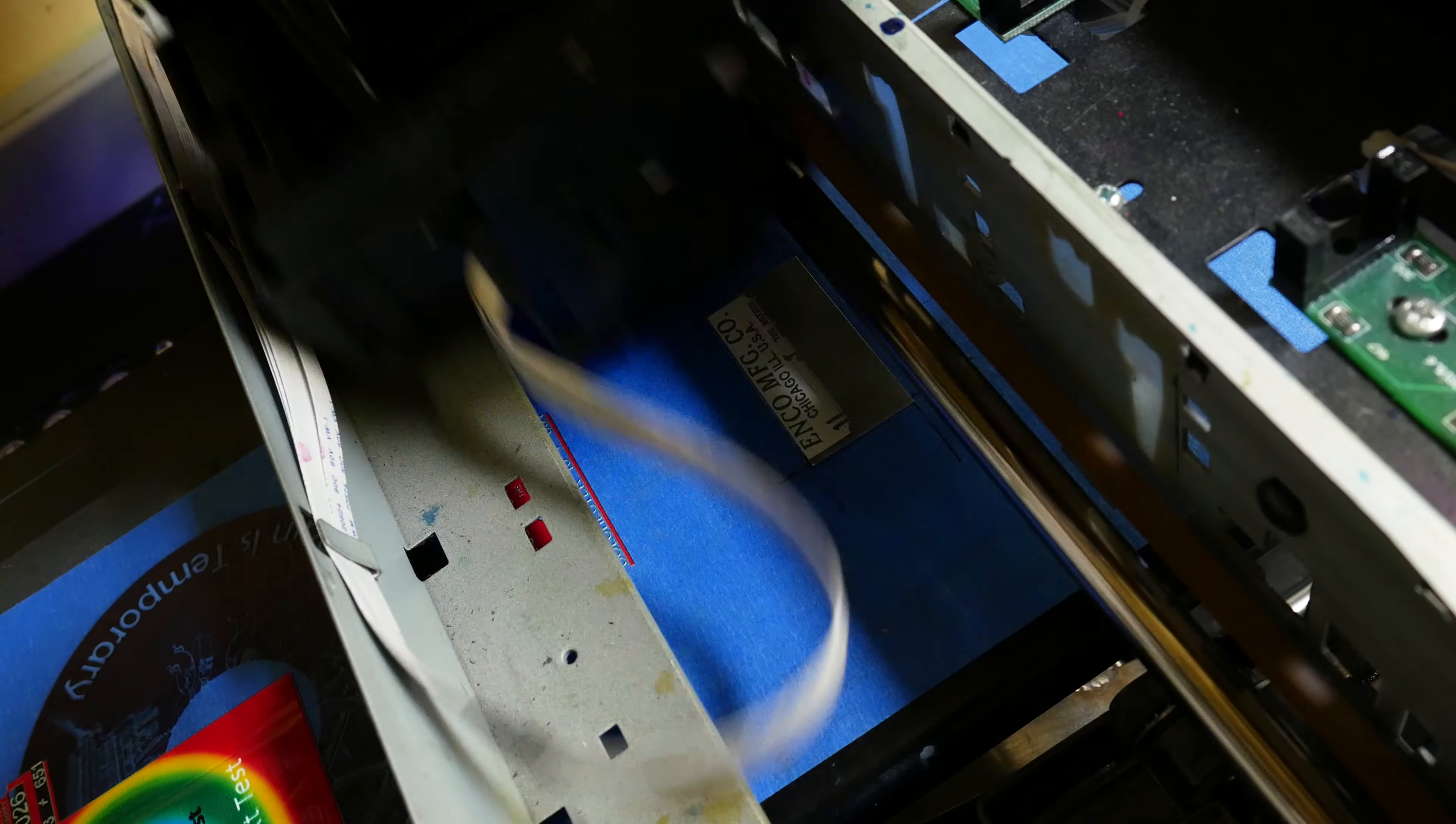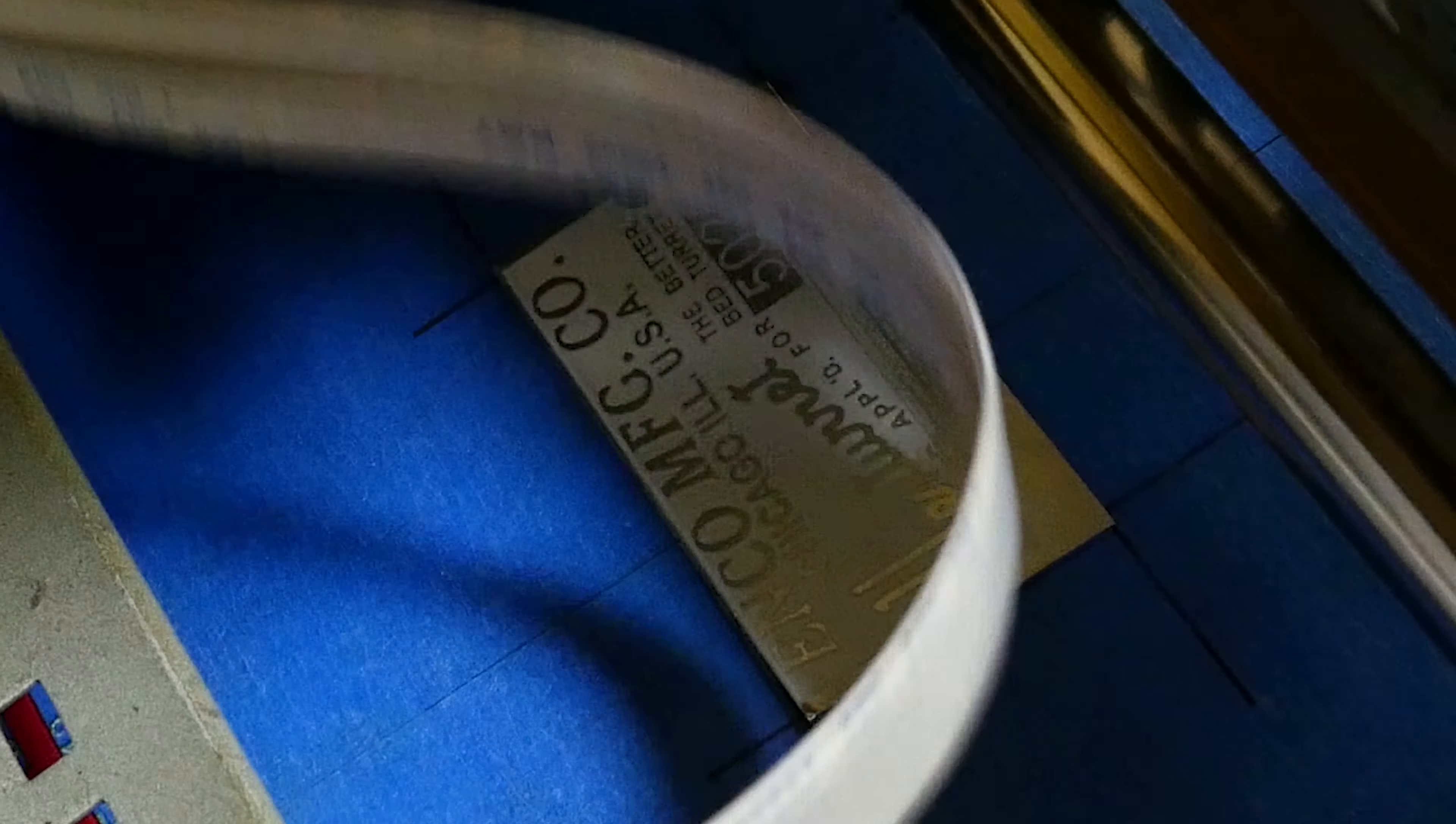So what has been done here is all of the existing ink lines, which are normally clear, are replaced with black, and instead of using the reservoir, individual bottles of a UV curable ink are used.